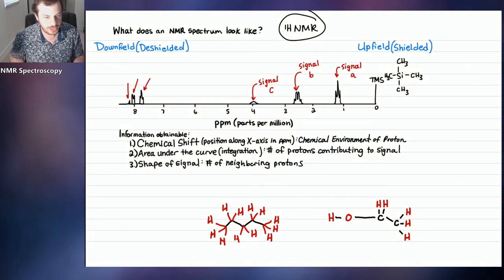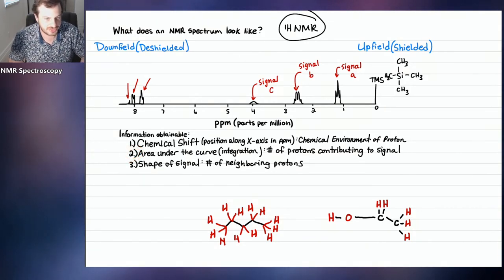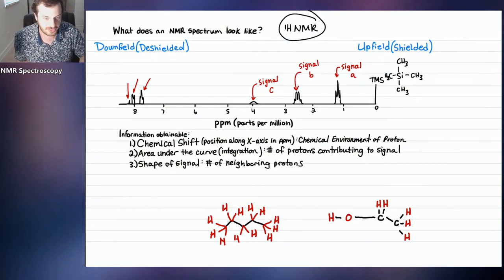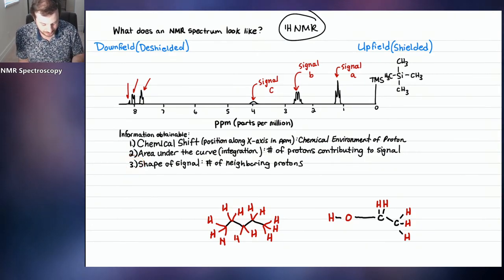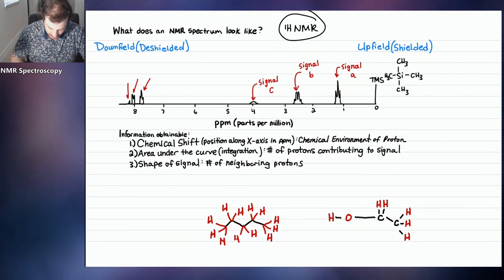This week we are going to talk about two more things. We're going to talk about something pretty easy, which is the integration value — the area under the curve — and the shape of the signal, which is going to tell you something about the number of neighboring protons. Let's go ahead and get started with that conversation, starting with integration.